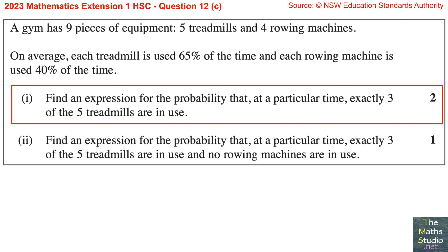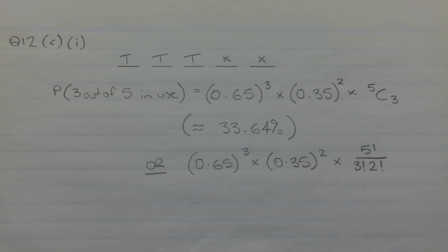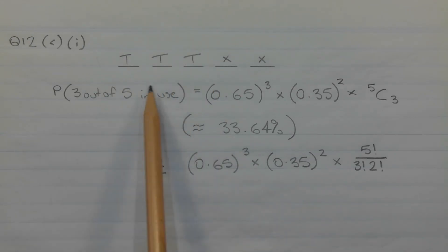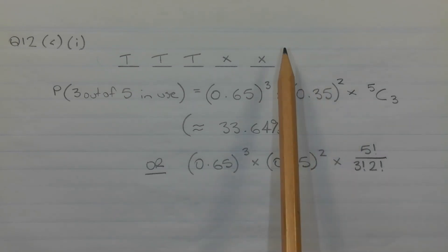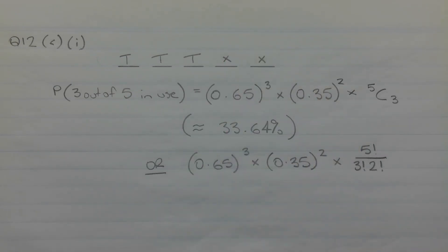Part 1. Find an expression for the probability that, at a particular time, exactly three of the five treadmills are in use. We can represent this situation using a dash diagram where the five dashes represent the five treadmills. The three T's represent the three treadmills that are in use, and the X's represent the remaining two treadmills that are not in use at that particular time.